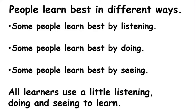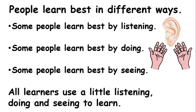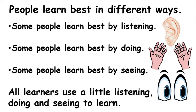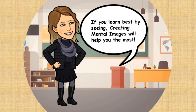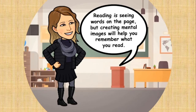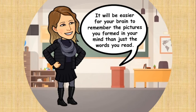People learn best in different ways. Some people learn best by listening. Some people learn best by doing. And some people learn best by seeing. As learners, we all use a little listening, doing, and seeing to learn. If you learn best by seeing, creating mental images will help you the most. Reading is seeing words on the page, but creating mental images will help you remember what you read. It will be easier for your brain to remember the pictures you formed in your mind than just the words you read.